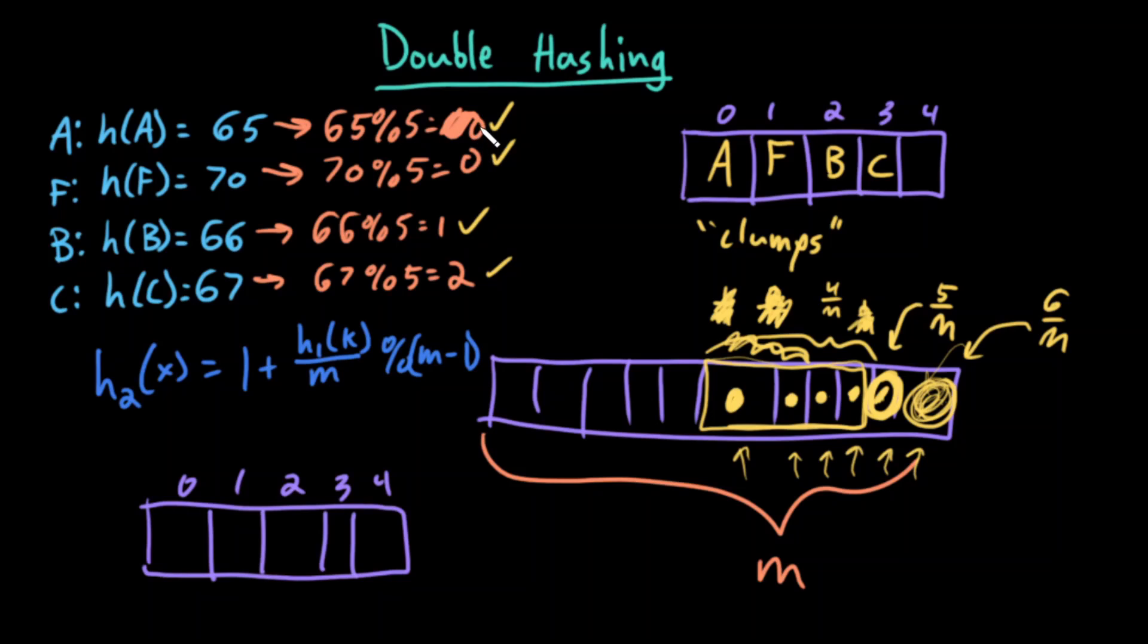I insert A - A maps to index zero, that's empty, I insert it, that's fine. My second element, F maps to index zero - uh-oh, I can't insert it there.